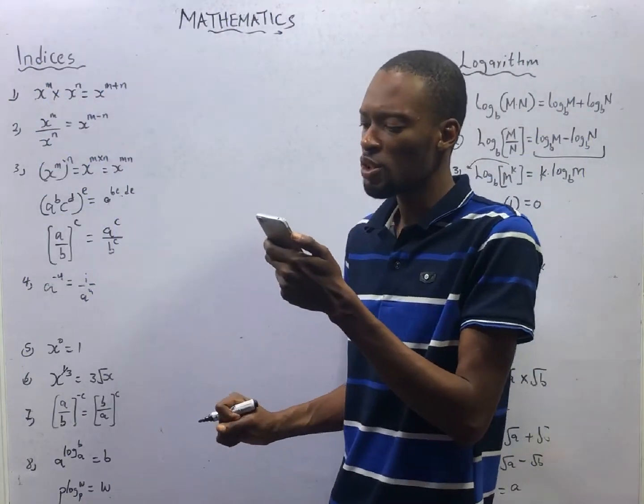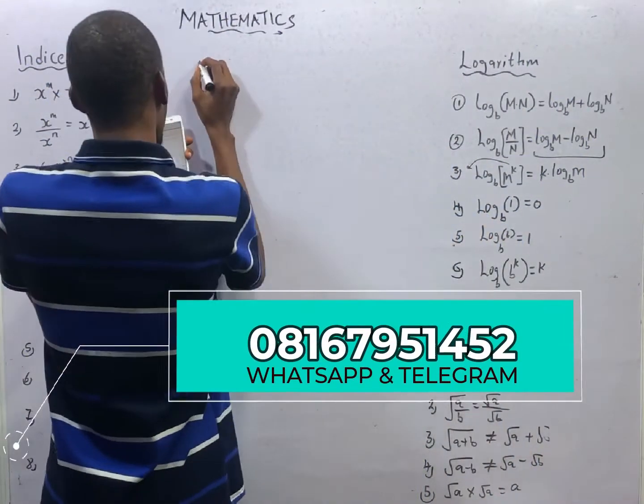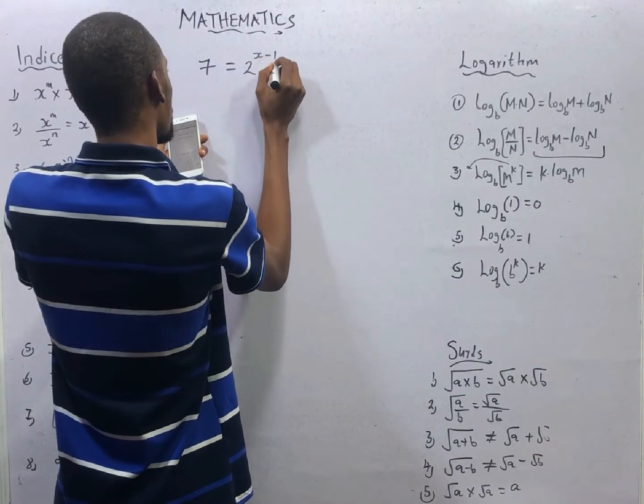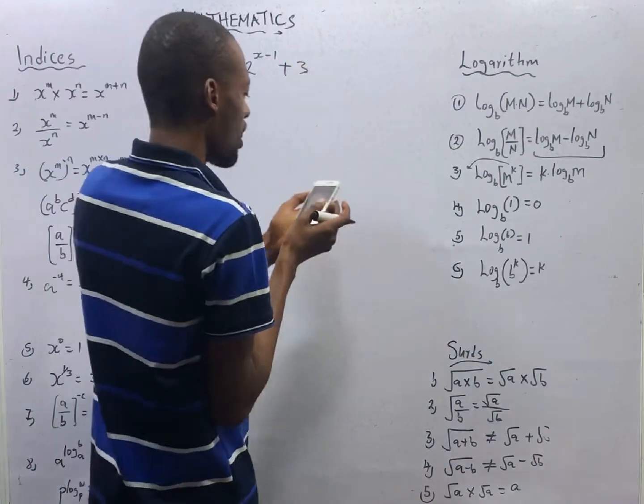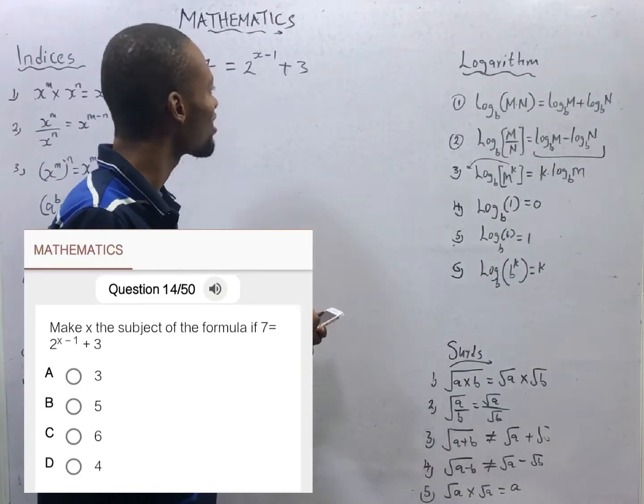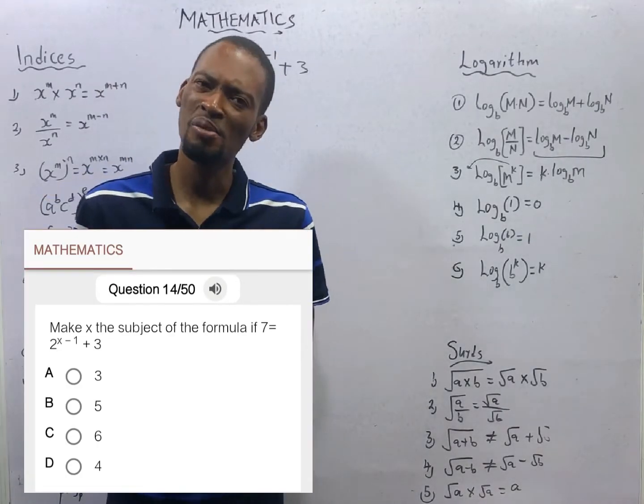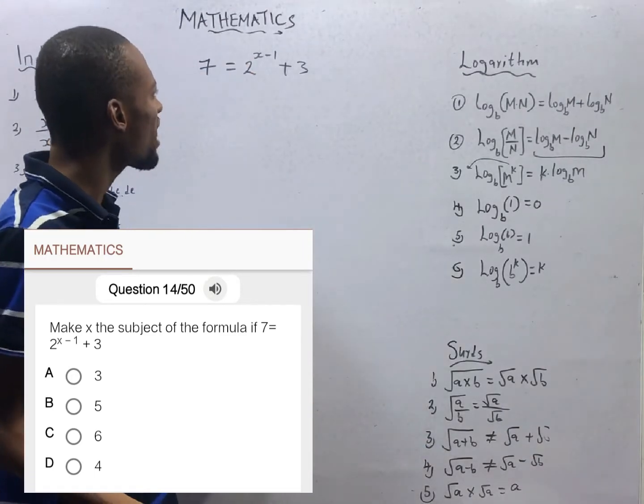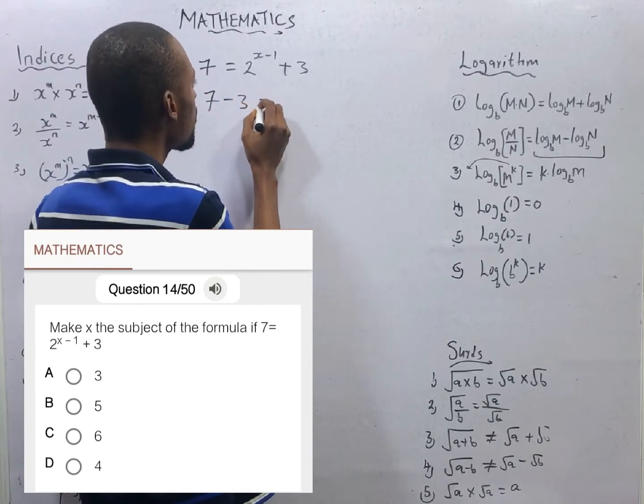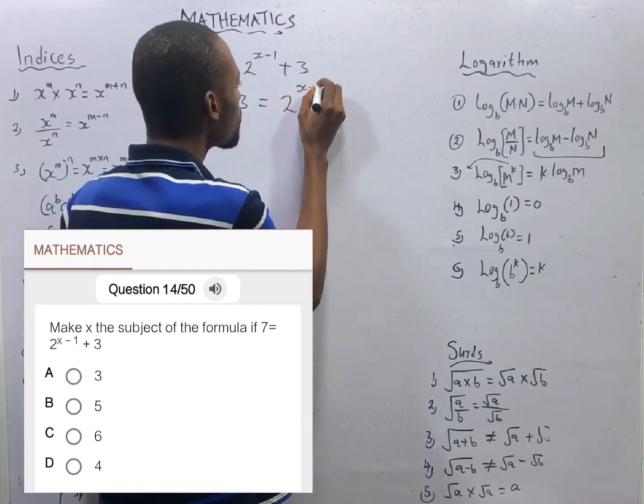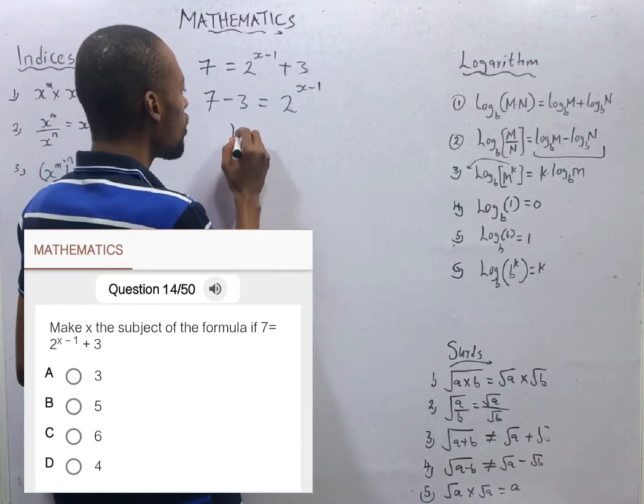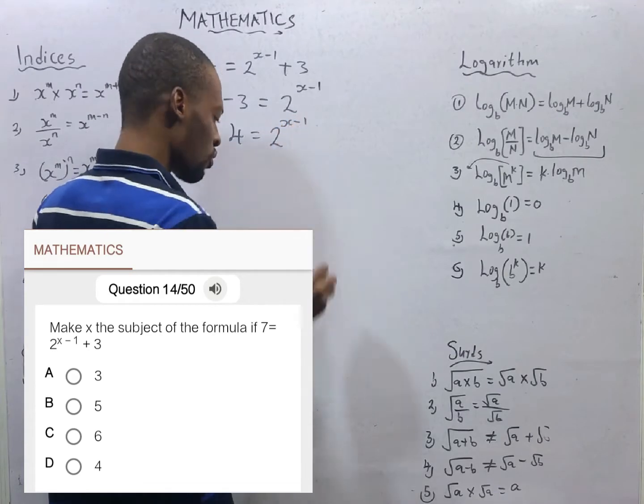Make s the subject of the formula. We are giving 7 is equal to 2 raised to the power of s minus 1 plus 3. And make s the subject of the formula. This is change of subject formula equation leading to indices. From here, if we collect like terms, we shall have 7 minus 3 is equal to 2 raised to the power of s minus 1. 7 minus 3 is 4. So 4 is equal to 2 raised to the power of s minus 1.